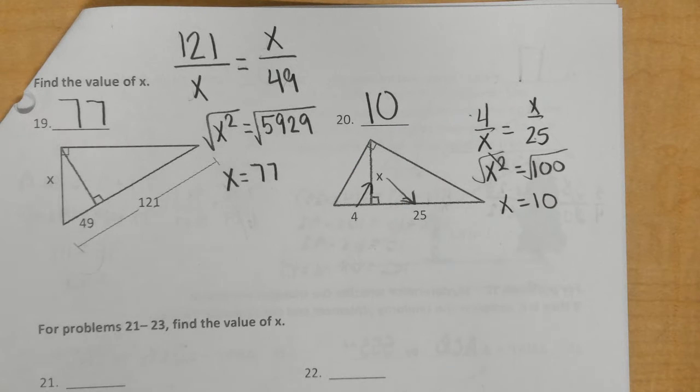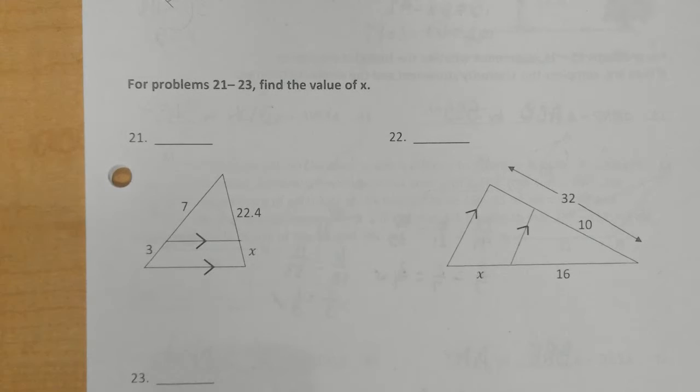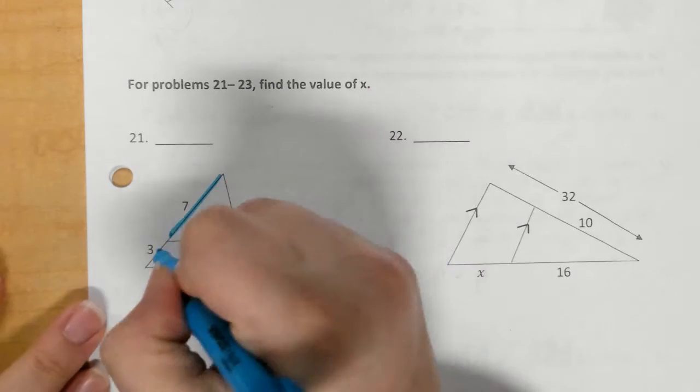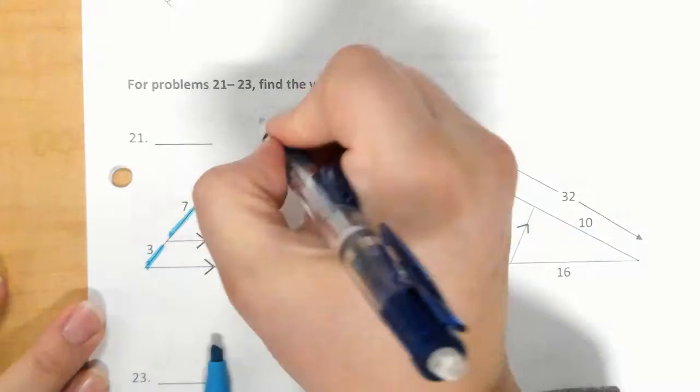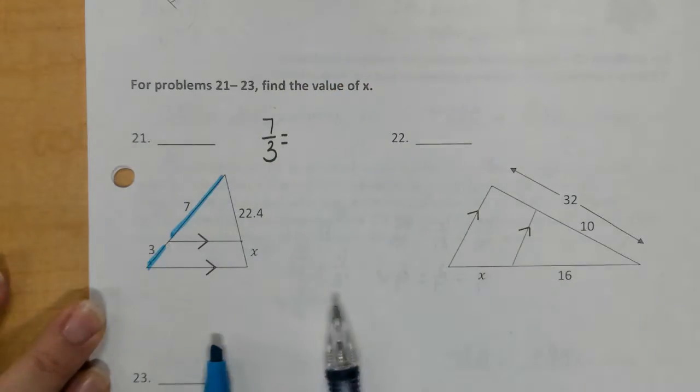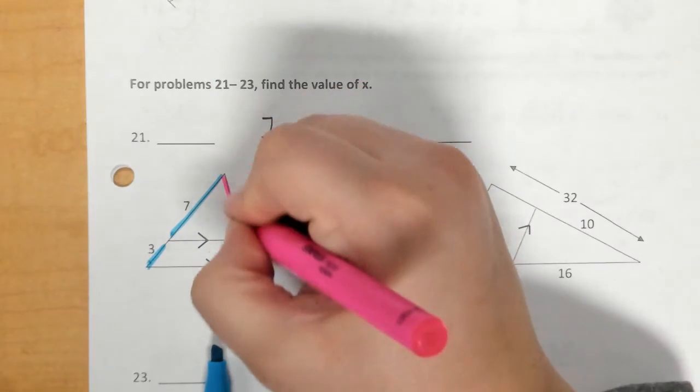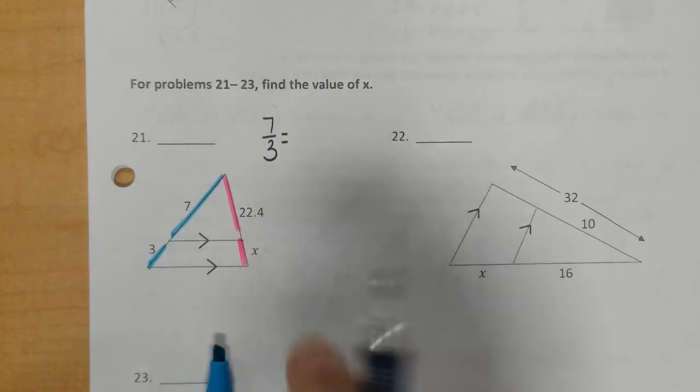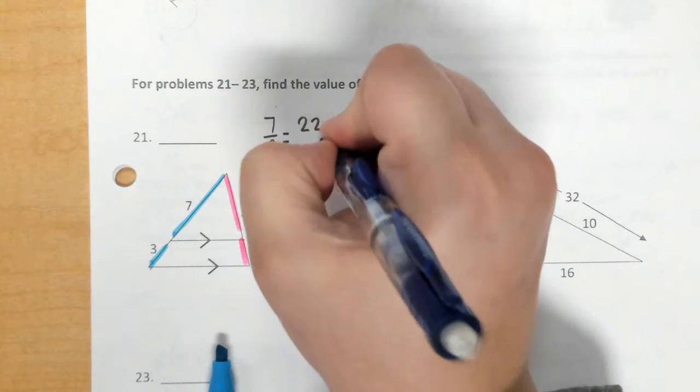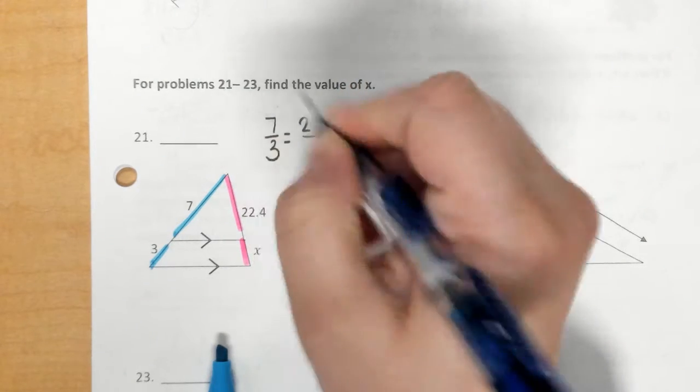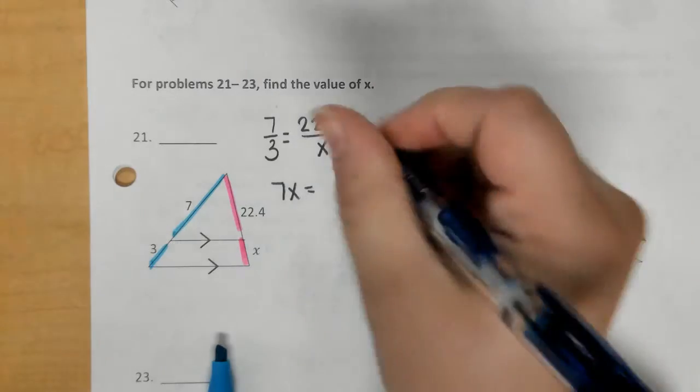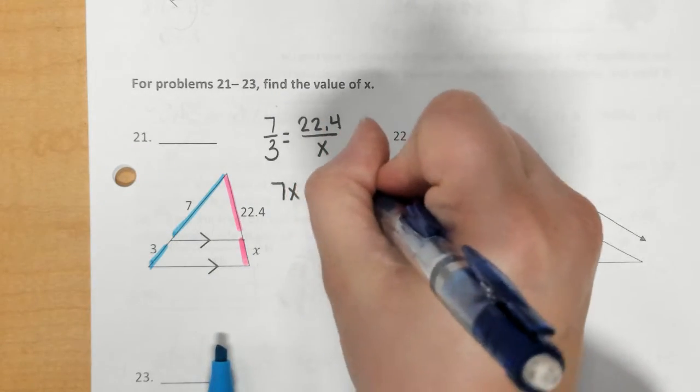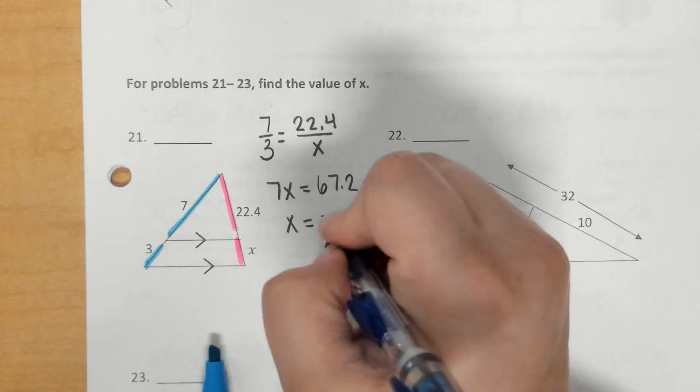For number 21, we have the different theorems that we learned in the last day of notes. For this one, I would go with 7 over 3.20, and then that would equal 22.4 over x. I would cross multiply and get 9.6.